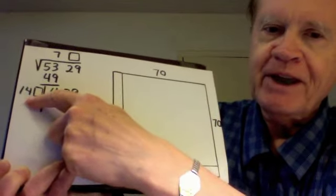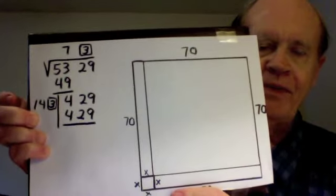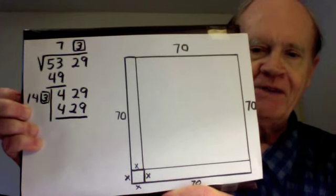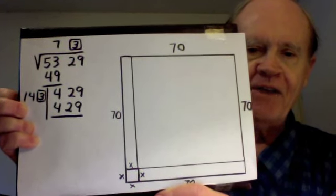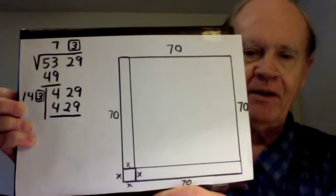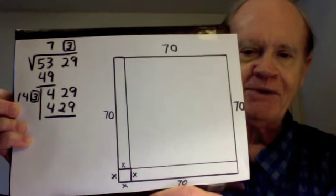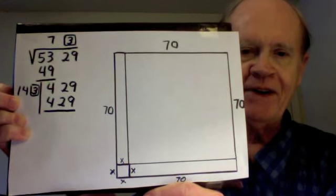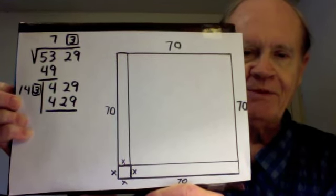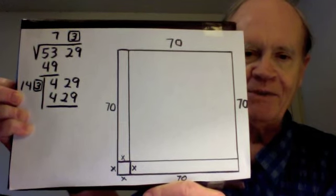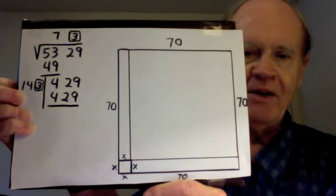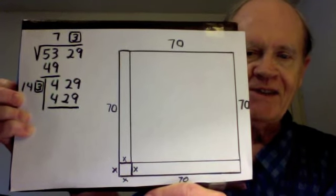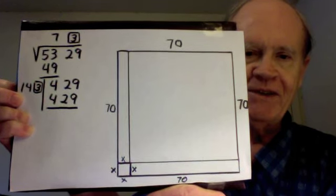X turns out to be 3 in this problem. What this represents with the 3 in both boxes is 70 times 3, that's one of the narrow rectangles, plus another 70 times 3, that's the other narrow rectangle, plus 3 times 3, which is the little square in the corner. 70 times 3 plus another 70 times 3 plus 3 times 3 is 143 times 3, which is 429, which places the remaining 429 square units in this L shape to complete the square.